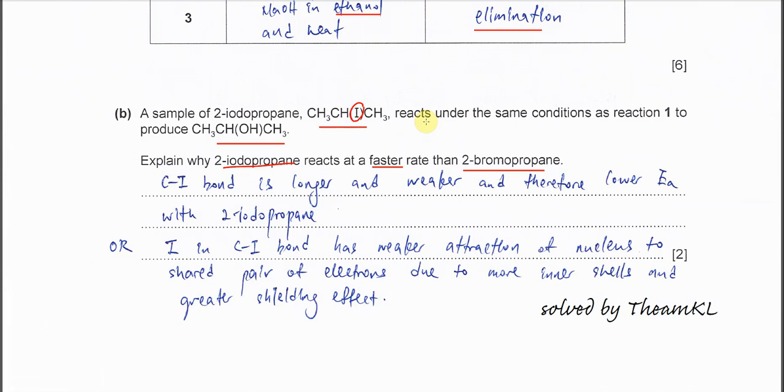We know that iodine has one extra shell than the bromine. Therefore, the C-I bond is going to be longer, so the bond length is longer. And if it's a longer bond, it's weaker, easy to break. Therefore, it just needs a lesser energy for it to react. That's why it has a lower EA. Lower EA means it's going to happen faster.